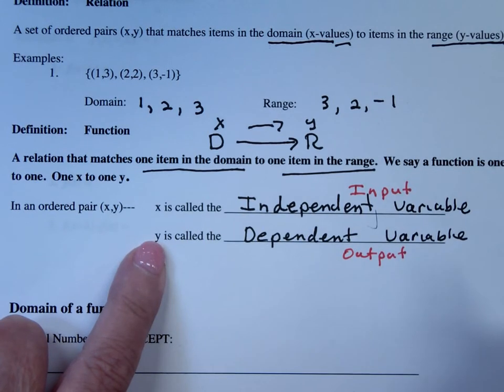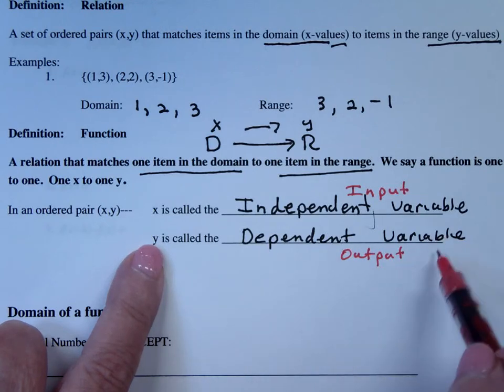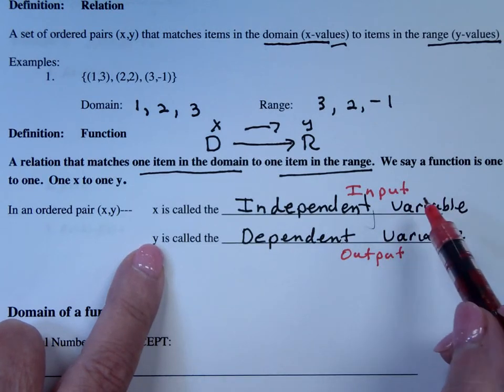So in other words, put in x, get out y. And y is called the dependent variable because it's dependent upon x, dependent upon the x value you put in.